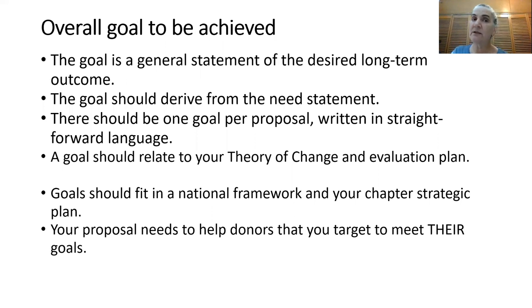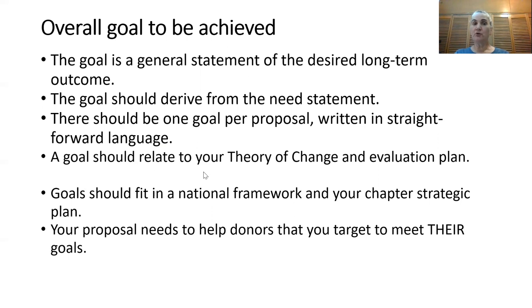Let's move on to the overall goal you want to achieve. The goal is basically the response to the need — a general statement of the desired long-term outcome, and it will derive from the needs statement. There should be one goal per proposal, and it should be written in straightforward language. A goal should relate to your theory of change and your evaluation plan, which will be covered later. Goals should fit into a national framework and your chapter strategic plan. Your proposal also needs to help donors meet their goals, so you need to link with the goals of the funders you are applying to.